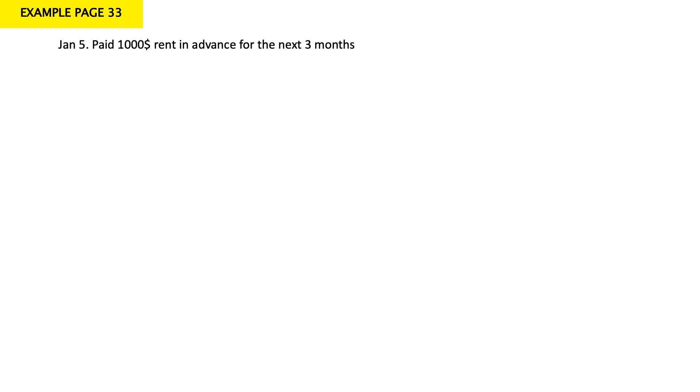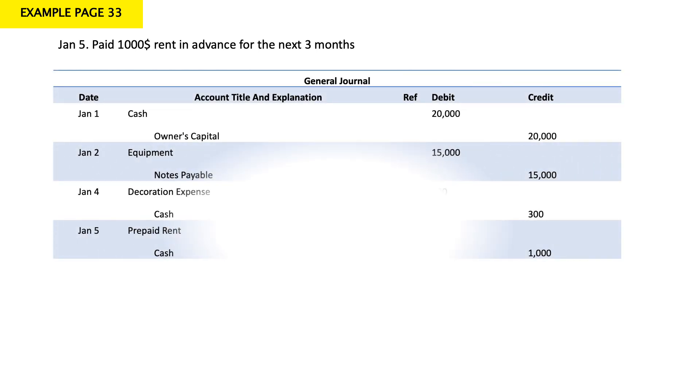On January 5, Emma paid $1,000 rent in advance for the next three months. Whenever we say 'in advance,' this is called prepaid expense. Since they paid the rent in advance, this is prepaid rent. We paid, so my cash decreased — cash decreasing goes to credit. Prepaid rent is a debit balance account because it's a current asset. So: debit prepaid rent and credit cash for $1,000.